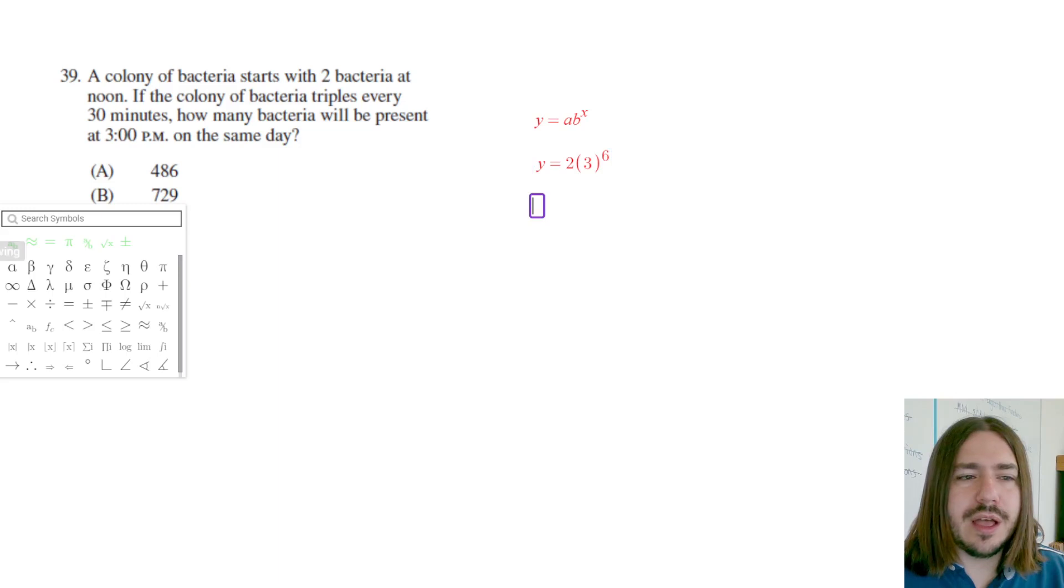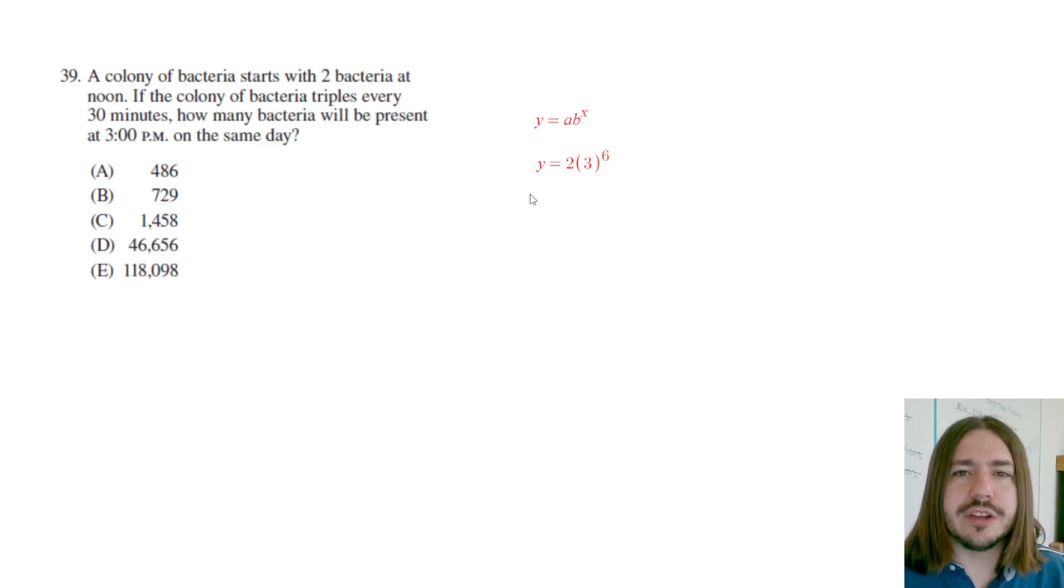This is one way how you can get your answer. You just type that in. So two times three to the power of six. Just typing this in the old scientific calculator here. We get 1,458. We get our answer.